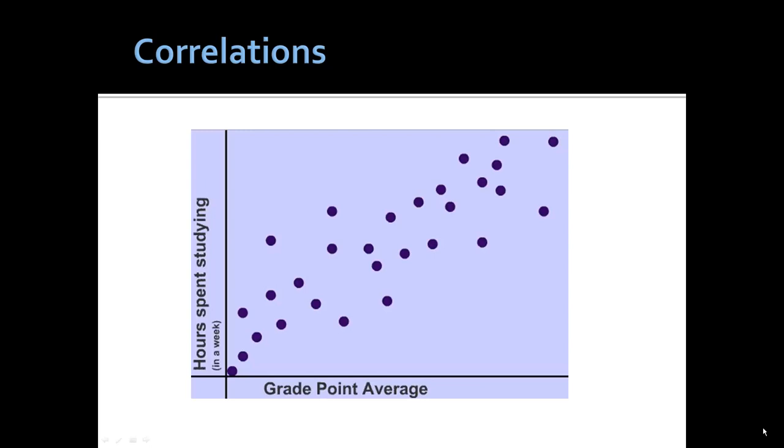Correlations have a very specific term in research methods. Correlations are a specific data analysis procedure in which we plot individual cases along an X and Y axis, and then examine the degree to which a change in X explains a change in Y.